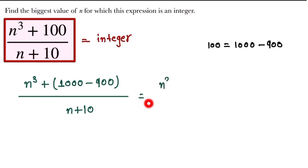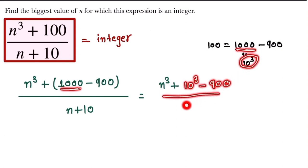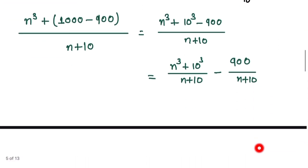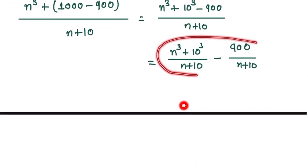Here, 1000 can be written as 10 to the power of 3, so we have 10³ minus 900 divided by n + 10. Now we separate this expression: n³ + 10³ divided by n + 10, minus 900 divided by n + 10. When we calculate this it gives the same value as the original expression.